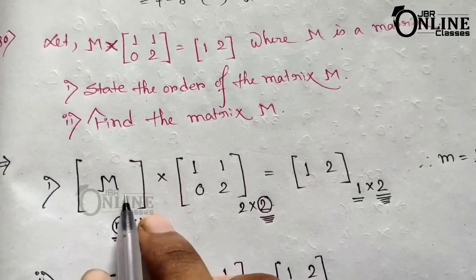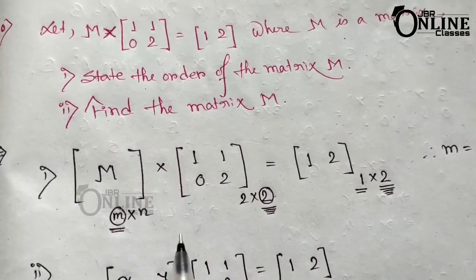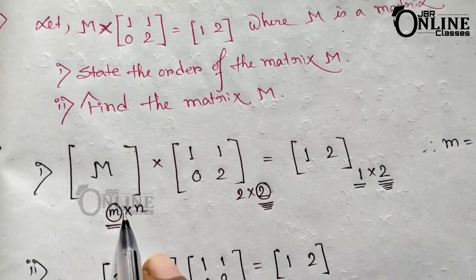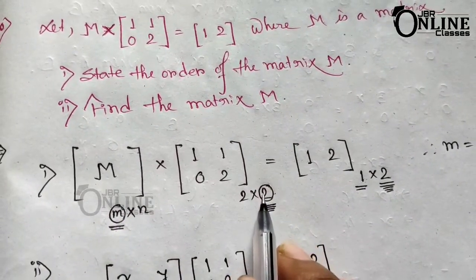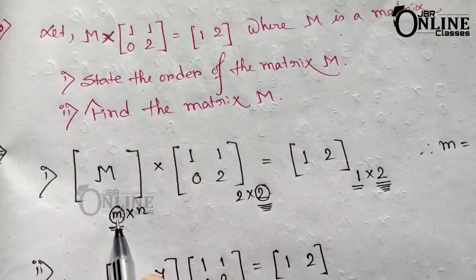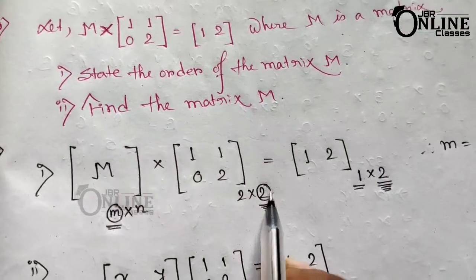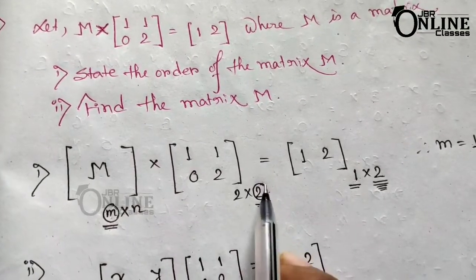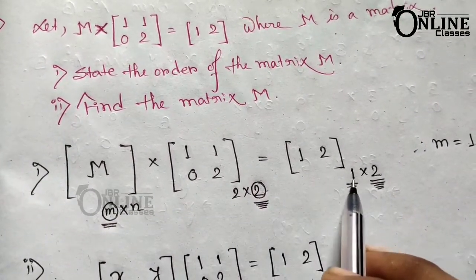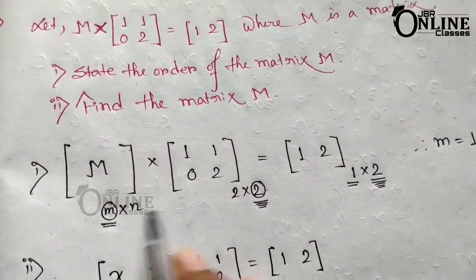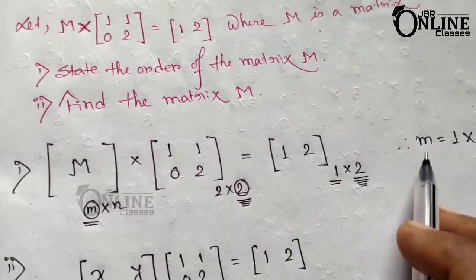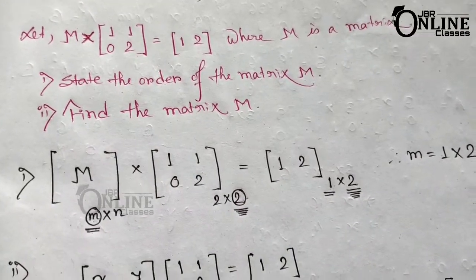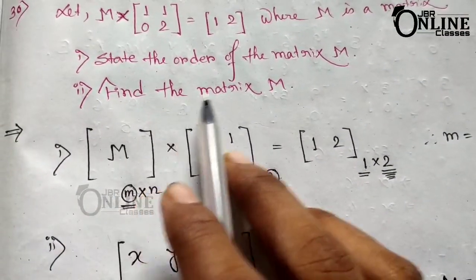When you multiply two matrices, the final matrix has the number of rows from the first matrix and the number of columns from the second. Here the final matrix is 1-by-2, and the second matrix is 2-by-2, so m equals 1. Therefore M is a 1-by-2 matrix.